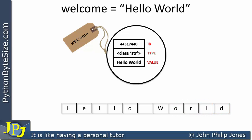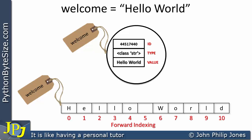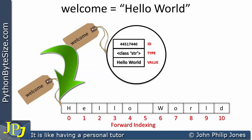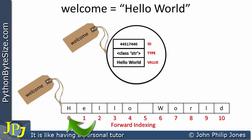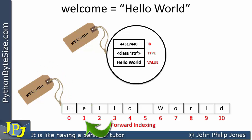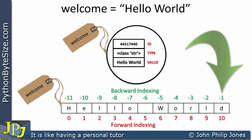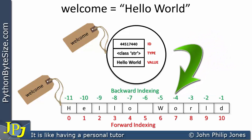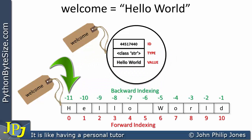We can index this particular string, and I'm going to call it 'welcome'. The whole thing is known as welcome, and we have what's referred to as forward indexing. If I wanted to get at the H, I can do so using the name 'welcome' and the number 0. To get the E, I use 'welcome' and index 1. We also have backward indexing, where we start at minus 1, minus 2, minus 3, all the way to minus 11 in this particular case.